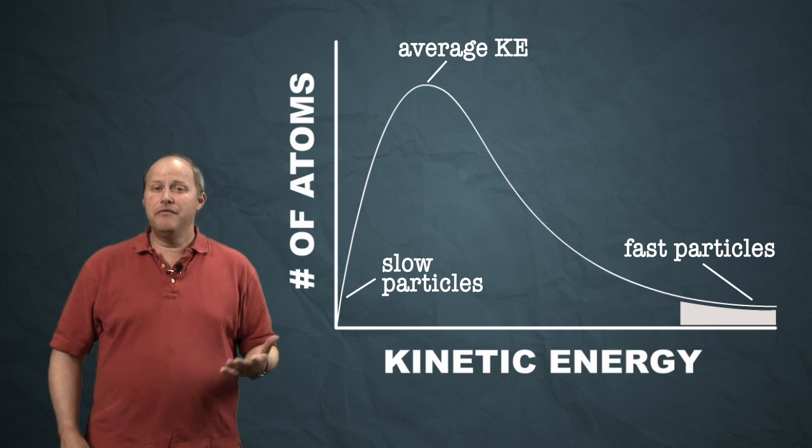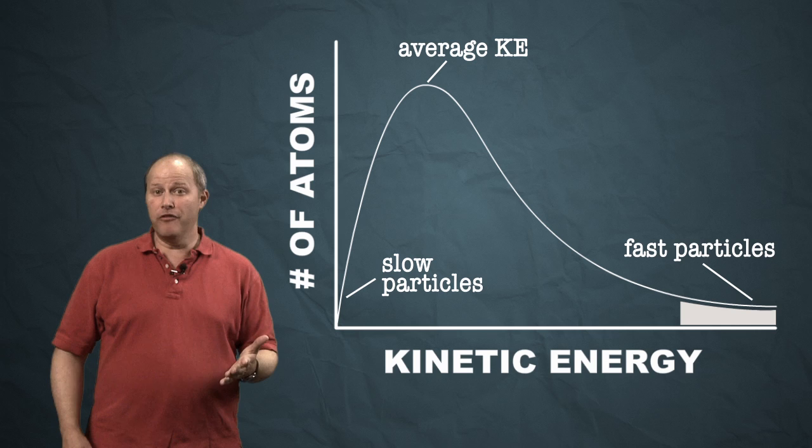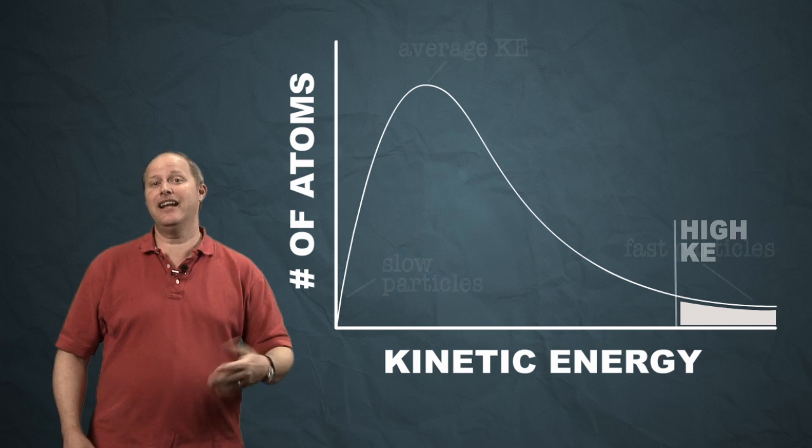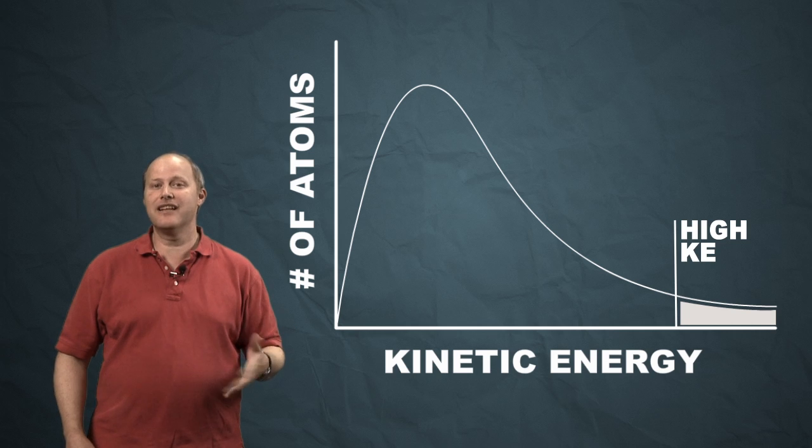This distribution turns out to be very important for chemistry. It's very important because all the molecules aren't the same. Some of them have very high kinetic energies, and the ones that have very high kinetic energies will tend to do things that the others won't.